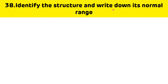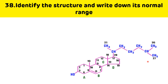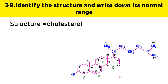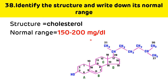Identify the structure and write down its normal range. The structure has four rings — three cyclohexane rings and one cyclopentane ring — forming a cyclopentanoperhydrophenanthrene ring. This is the structure of cholesterol, which is derived from acetyl-CoA. Its normal range is 150 to 200 mg/dL.